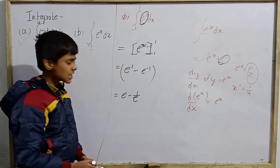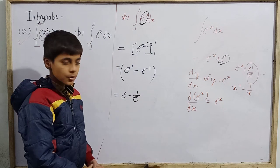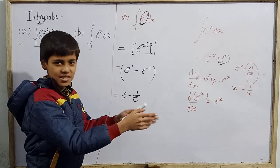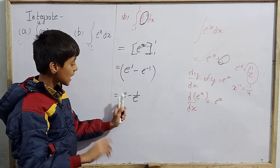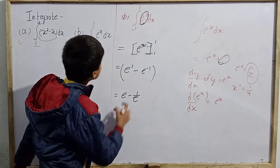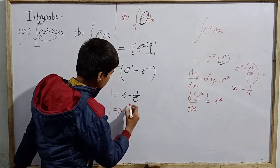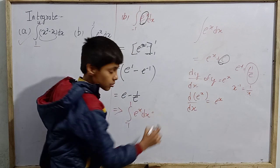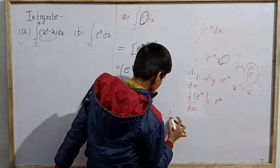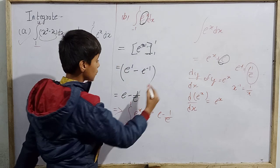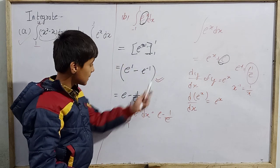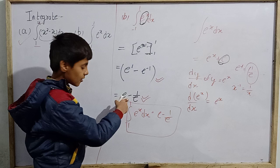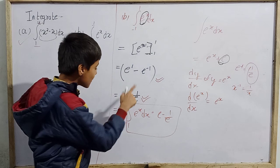So the answer is e - 1/e. Taking LCM e, this is (e² - 1)/e. The final answer can be written as e - 1/e or equivalently e - e^(-1); both forms are correct. The answer e - 1/e is the preferred form.